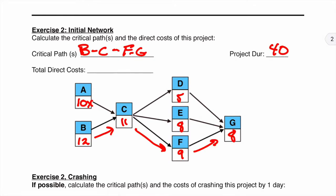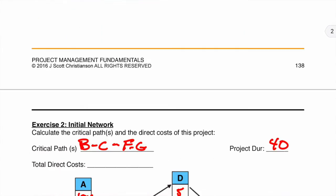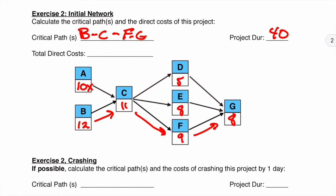Our total direct cost, we are going to get that by going back up here and adding up all these values here, because we want to know what it is prior to any crashing. And if we add those up, we will find it is $14,200. So now we need to actually figure out between B, C, F and G, which is going to be the cheapest to crash.